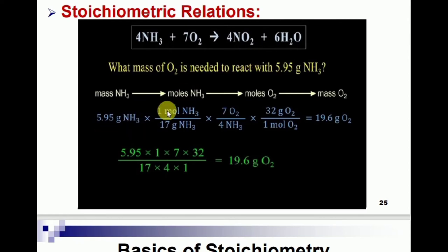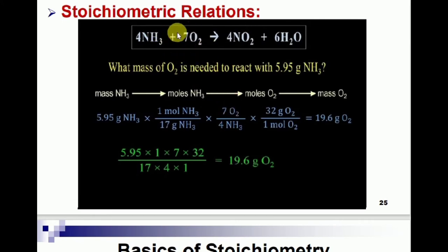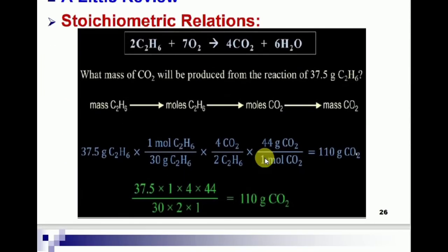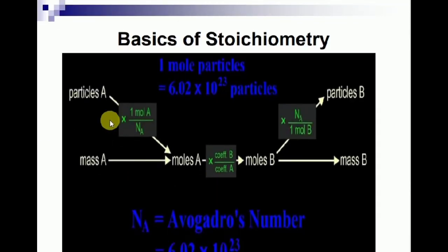According to the stoichiometric equation, 7 moles of O2 react with 4 moles of ammonia. This is the stoichiometric relation used in this problem. Then convert using molar mass — one mole of O2 has 32 grams — and convert into mass of O2 by the mass-mass relationship. This is the concept behind stoichiometric relations.